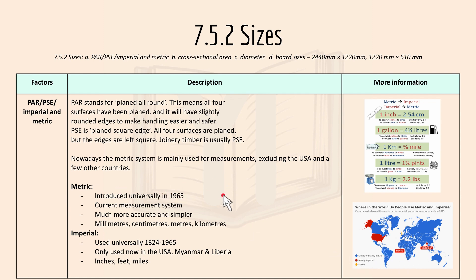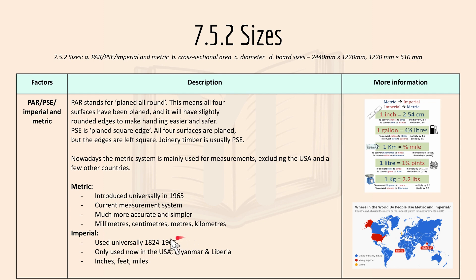Metric was introduced universally in 1965. It's the current measuring system and it's much more accurate and simpler — for example, 10mm equals 1cm. Units include millimetres, centimetres, metres, and kilometres. The imperial system was used universally from 1824 to 1965, and is now only used in the USA, Myanmar, and a few other countries. Imperial units include inches, feet, and miles.